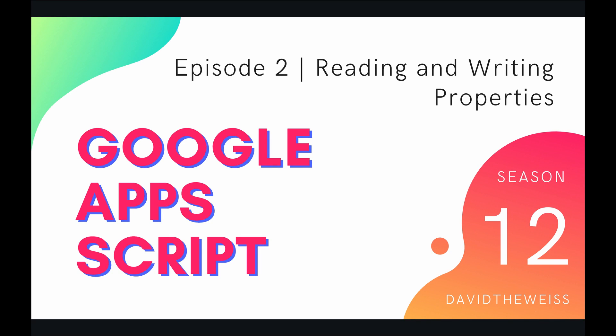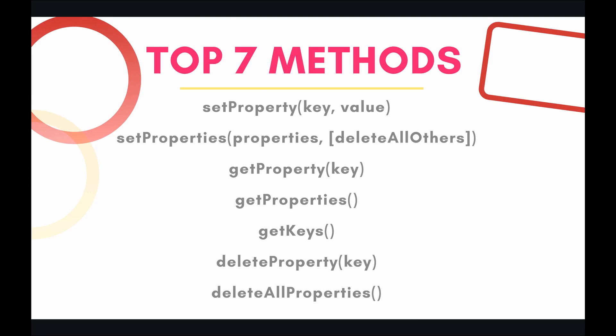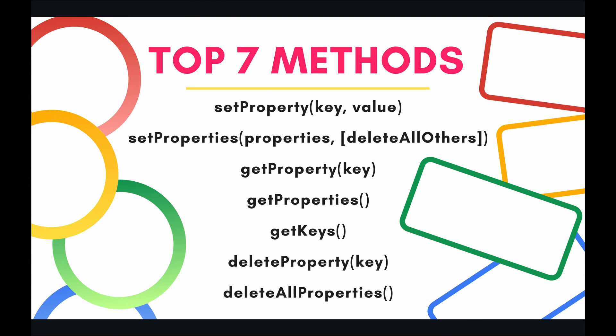Hey coders and welcome to episode 2 of our property service playlist on the Google Apps Script course. In this video we're going to be learning about reading and writing properties using the context of a web app. The top 7 methods I have picked out for today are: set property, set properties, get property, get properties, get keys, delete property, and finally delete all properties. Let's have some fun looking at all these methods in the code right now.